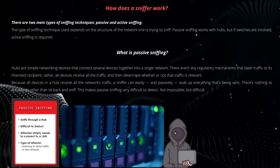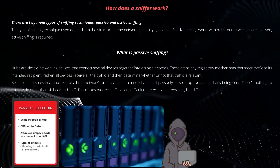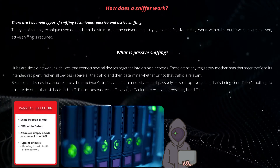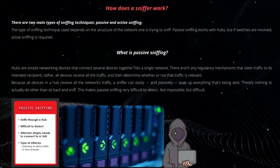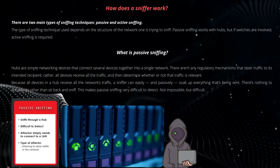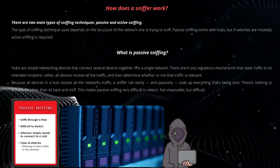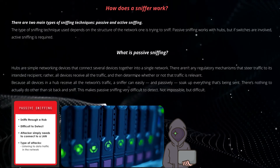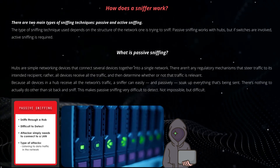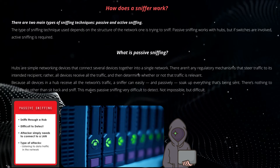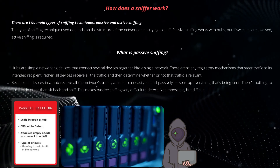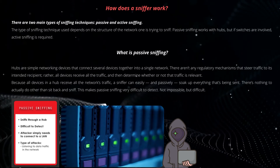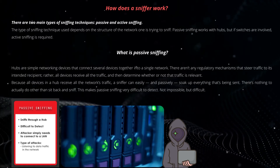There are two main types of sniffing techniques: passive and active sniffing. The type used depends on the structure of the network being sniffed. Passive sniffing works with hubs, but if switches are involved, active sniffing is required. Hubs are simple networking devices that connect several devices into a single network with no regulatory mechanisms to steer traffic to its intended recipient — all devices receive all the traffic and determine whether it's relevant. Because all devices in a hub receive all traffic, a sniffer can easily and passively soak up everything being sent, making passive sniffing very difficult to detect.